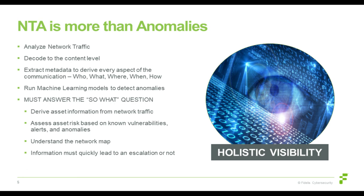But it's more than just detecting anomalies. From a Fidelis standpoint, when you detect an anomaly, there are a lot of questions to answer next: why is this important, why did it happen, how did you derive normal, why is this different from normal? If you have a solution just applying machine learning models and AI, and the analyst is left with more questions than answers, it won't be effective. While analyzing traffic, you've got to decode the content — you have to know what's inside. You need to extract enough information to answer who, what, where, when, and how this information was flowing, so that when you find an anomaly, you can figure out what to do next.